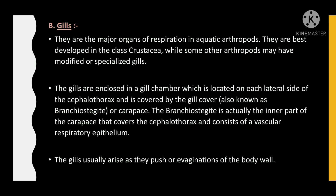Gills are the major organs of respiration in aquatic arthropods. They are best developed in the class Crustacea, while some other arthropods may have modified or specialized gills. The gills are enclosed in a gill chamber located on each lateral side of the cephalothorax and are covered by the gill cover, also known as branchiostegite or carapace. The branchiostegite is actually the inner part of the carapace that covers the cephalothorax and consists of a vascular respiratory epithelium.